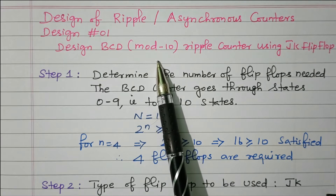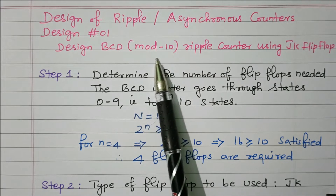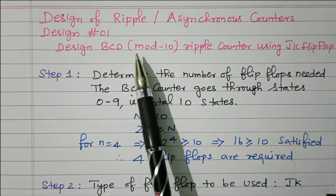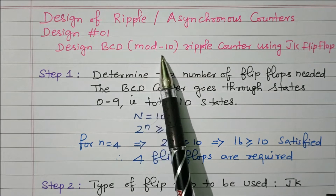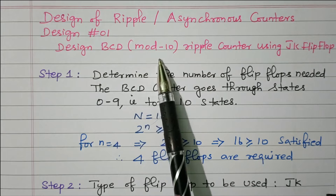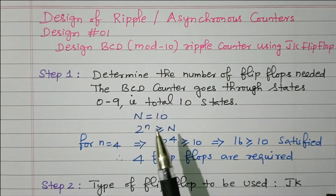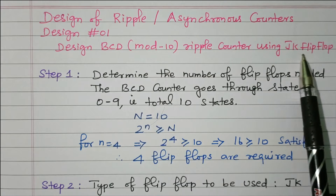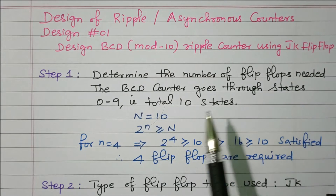Similarly we have mod-5, mod-6, mod-7, mod-9 and other counters available. For mod-10, out of 16 (which is 2 to the power 4) combinations, 0 to 9 will appear and 10 to 15 will not appear — that is called a mod counter. So in this problem we need to design a mod-10 counter.